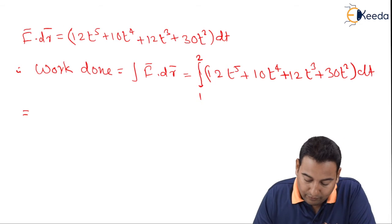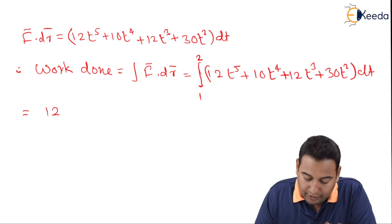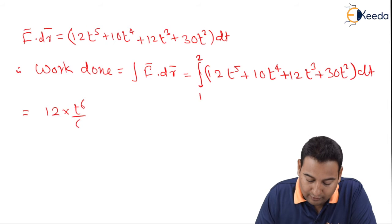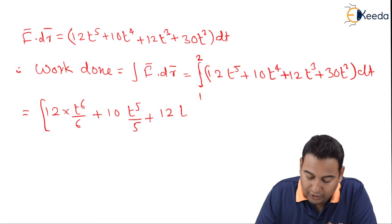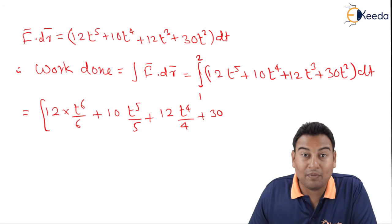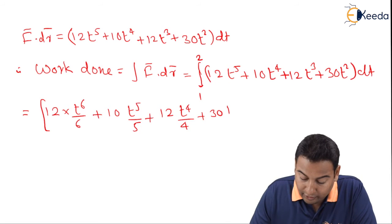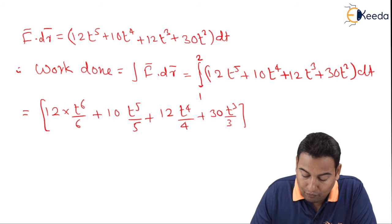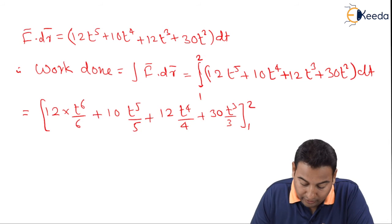Let's integrate. t raised to 5 becomes t raised to 6 upon 6. 10t raised to 5 upon 5, 12t raised to 4 upon 4. t raised to n plus 1 upon n plus 1, that formula I'm applying. t cube upon 3, and the limits are from 1 to 2. Let's substitute the limits.